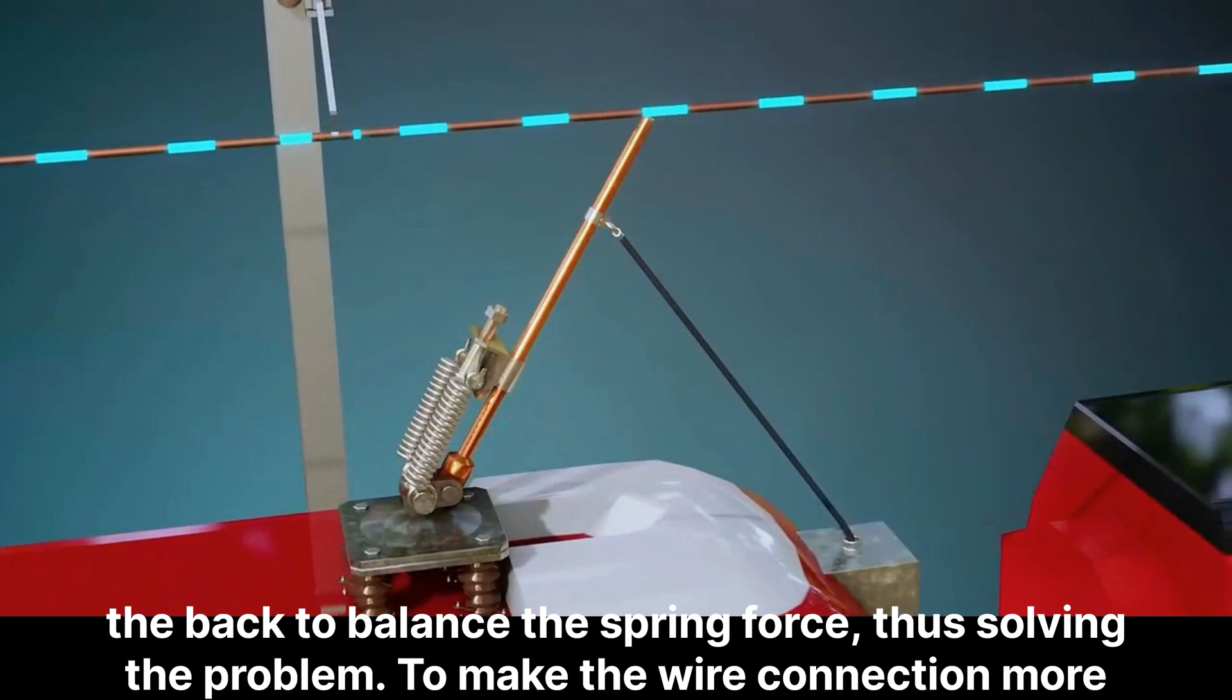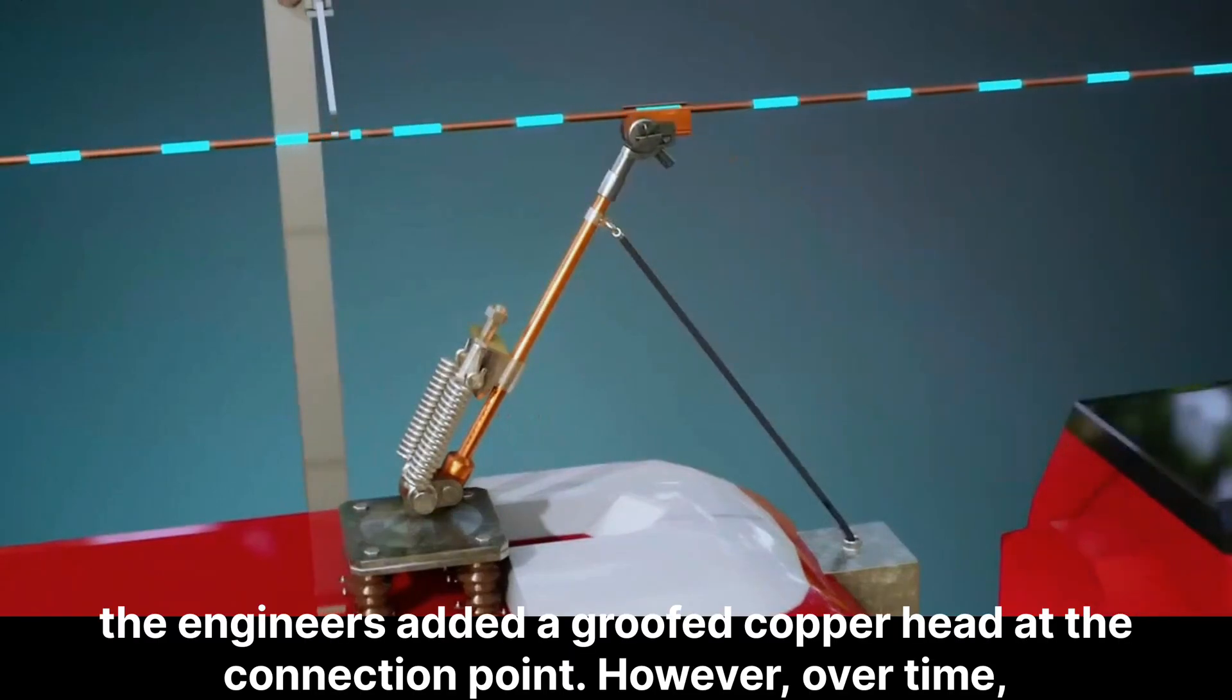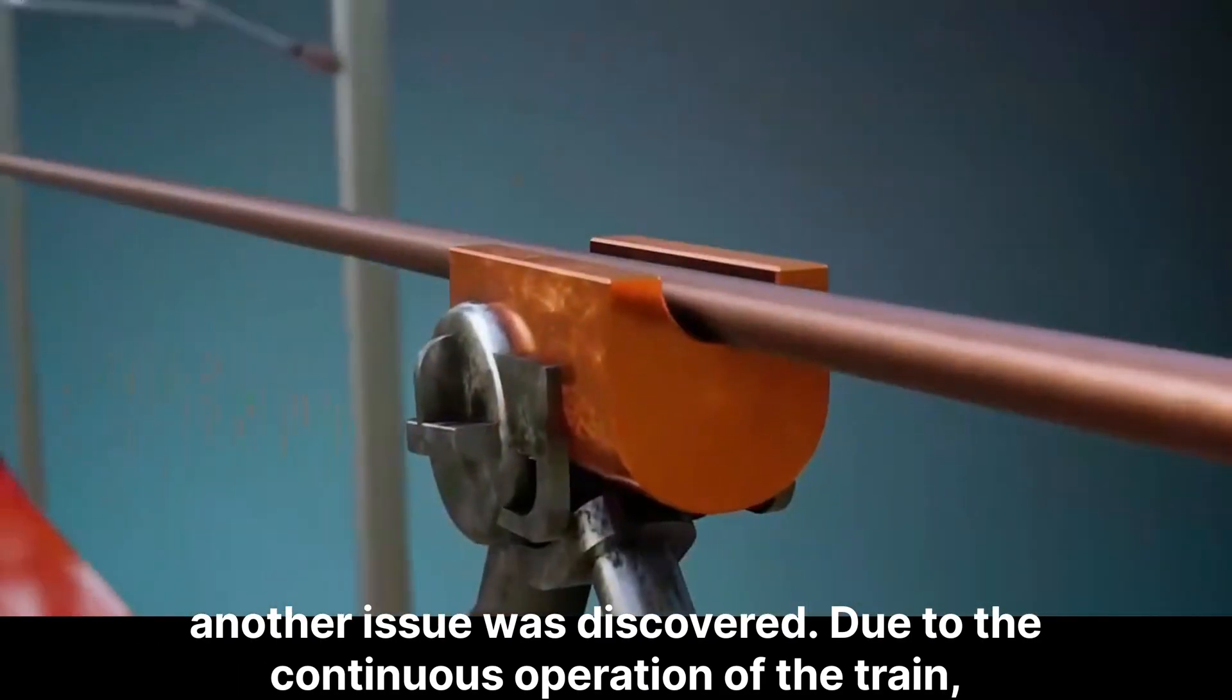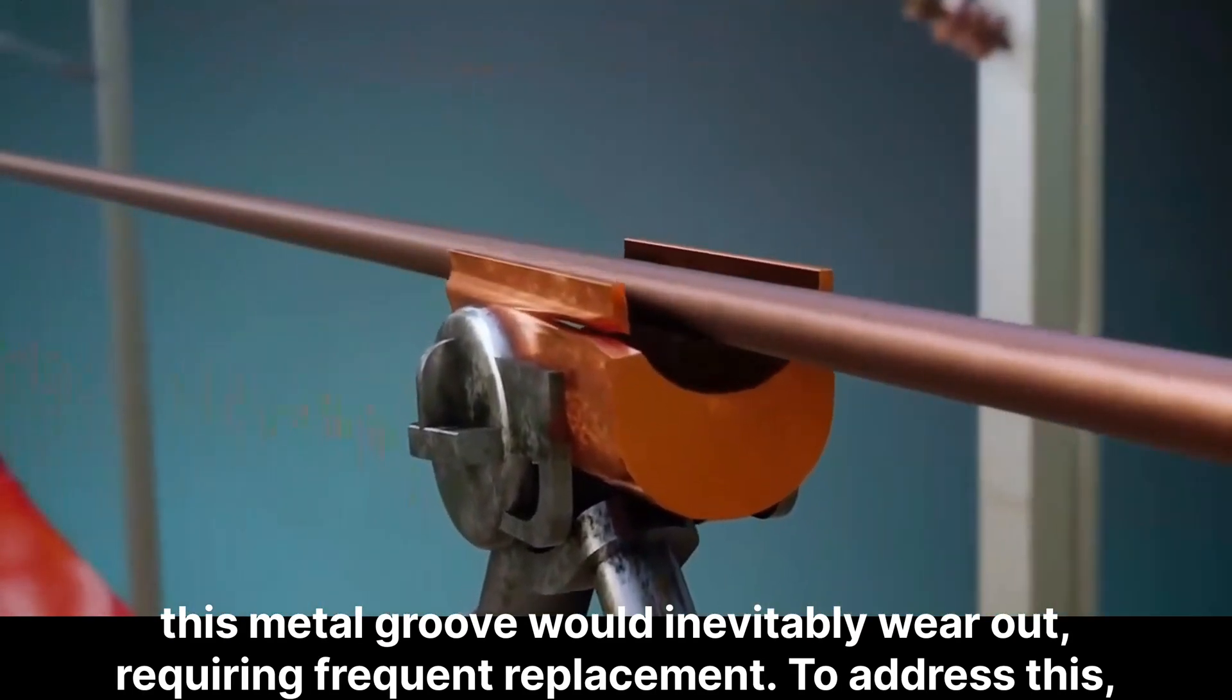To make the wire connection more precise, the engineers added a grooved copper head at the connection point. However, over time, another issue was discovered. Due to the continuous operation of the train, this metal groove would inevitably wear out, requiring frequent replacement.